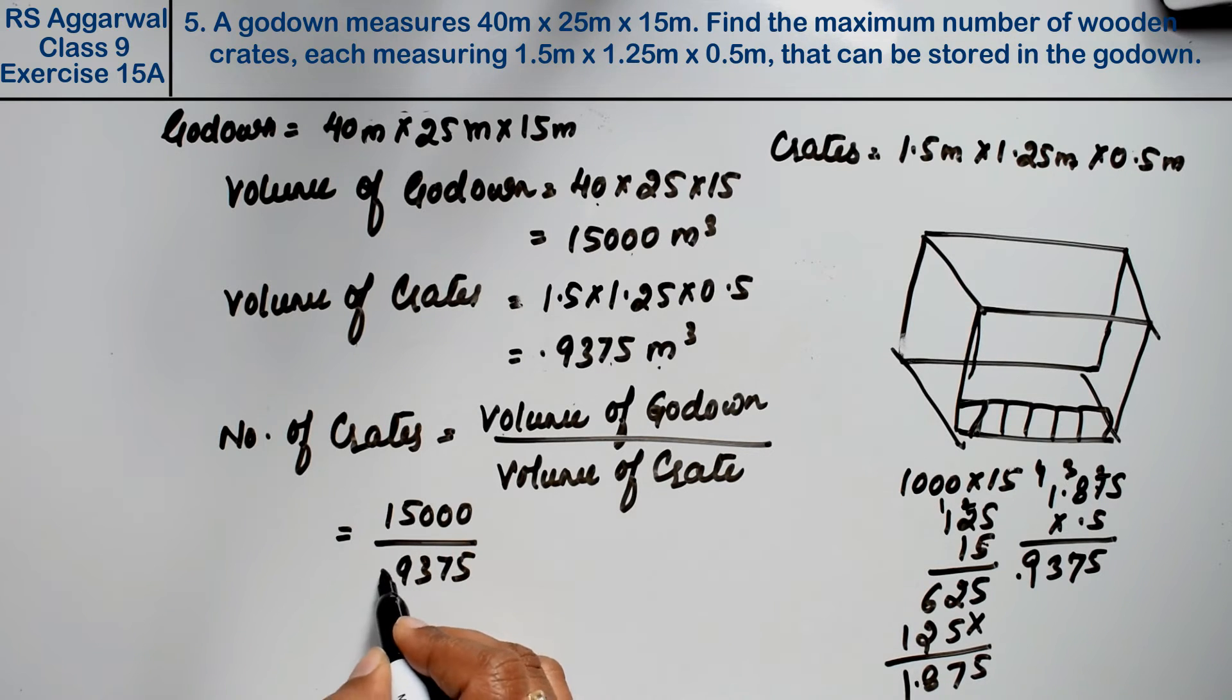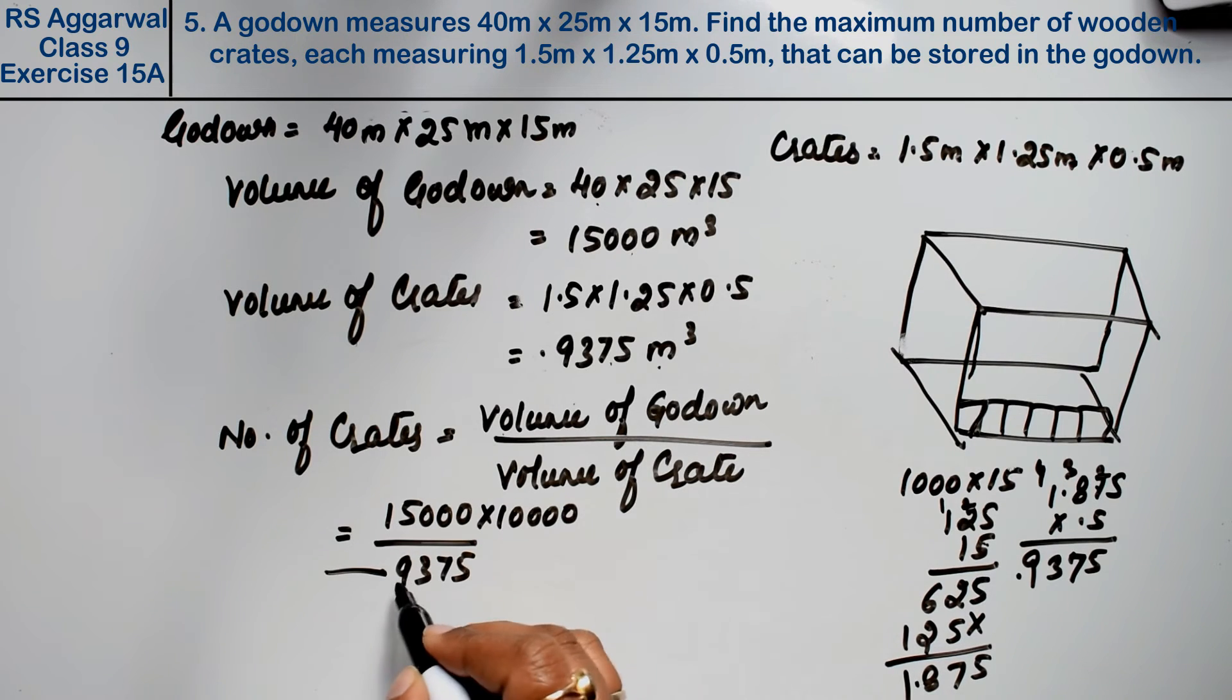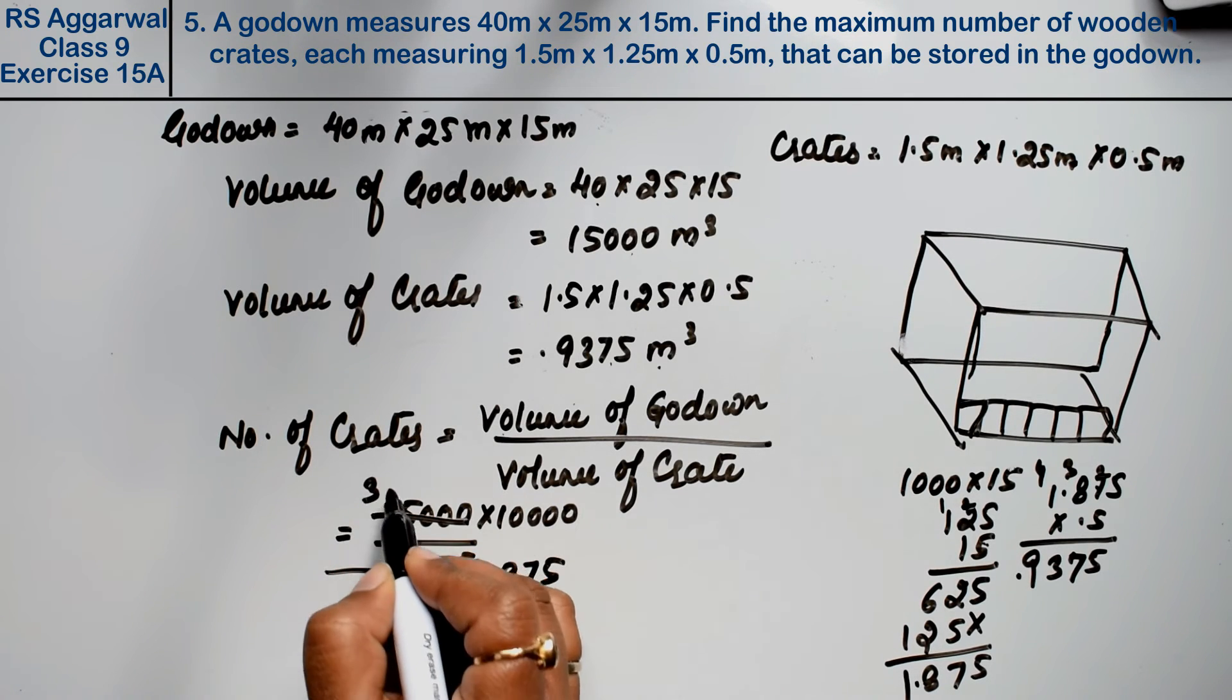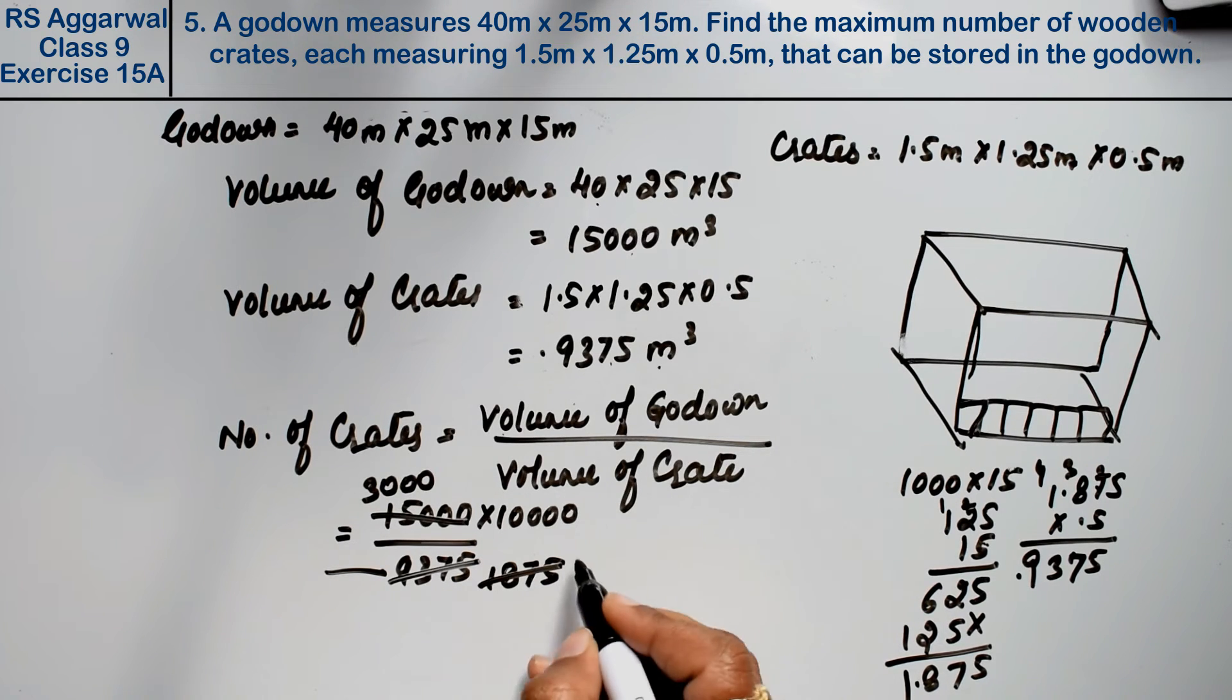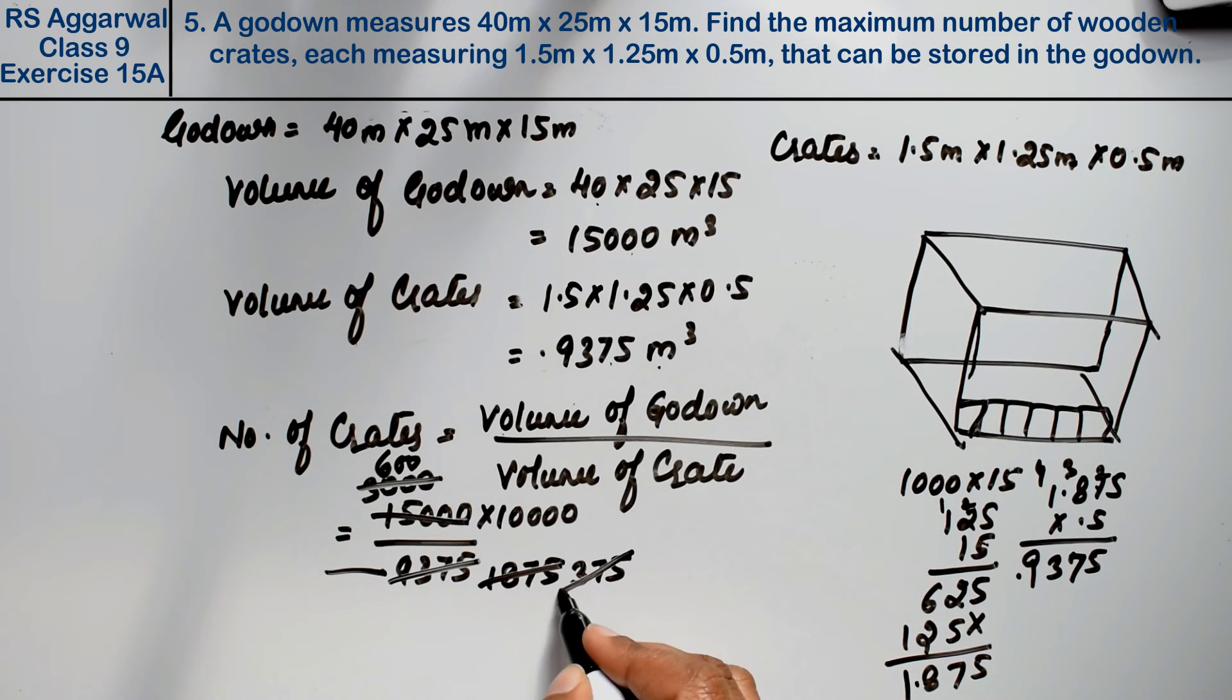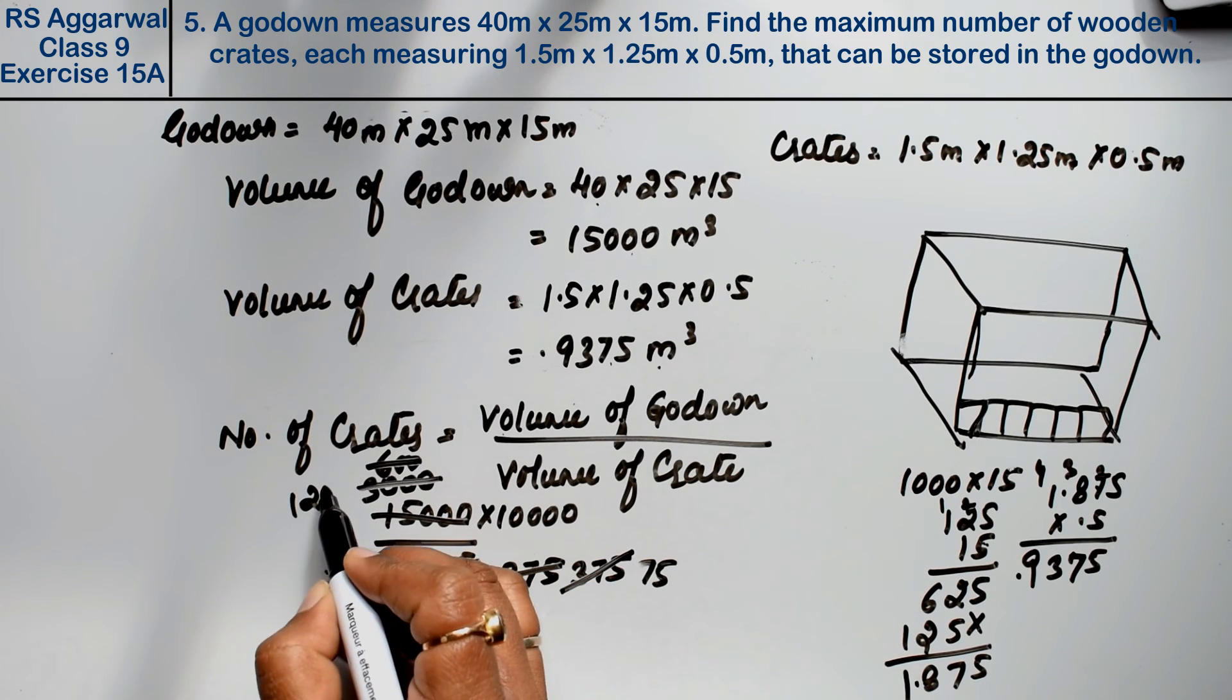Dividing 15,000 by 0.9375: 9, 3, 7, 5. Remove the decimal point—after 4 places, add four zeros. Starting the division: 5 into 15 is 3; 5 into 40 is 8; 5 into 37 is 7; 5 into 25 is 5; continuing through each step of the long division calculation.